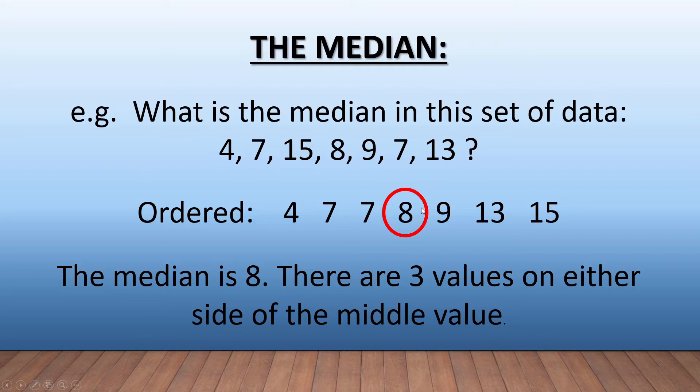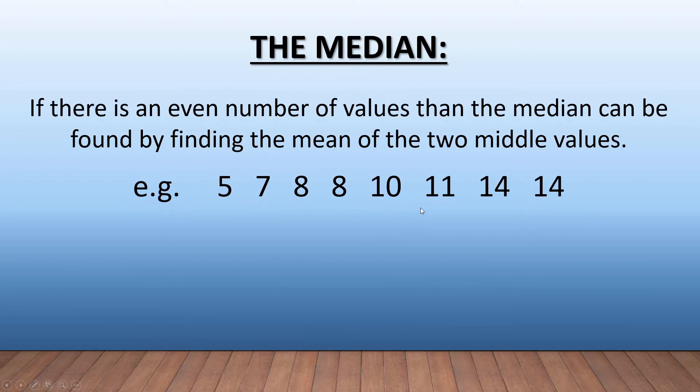But what if you have an even number of values? If there's an even number, as this is saying to us, then the median can be found by finding the mean of the two middle values.